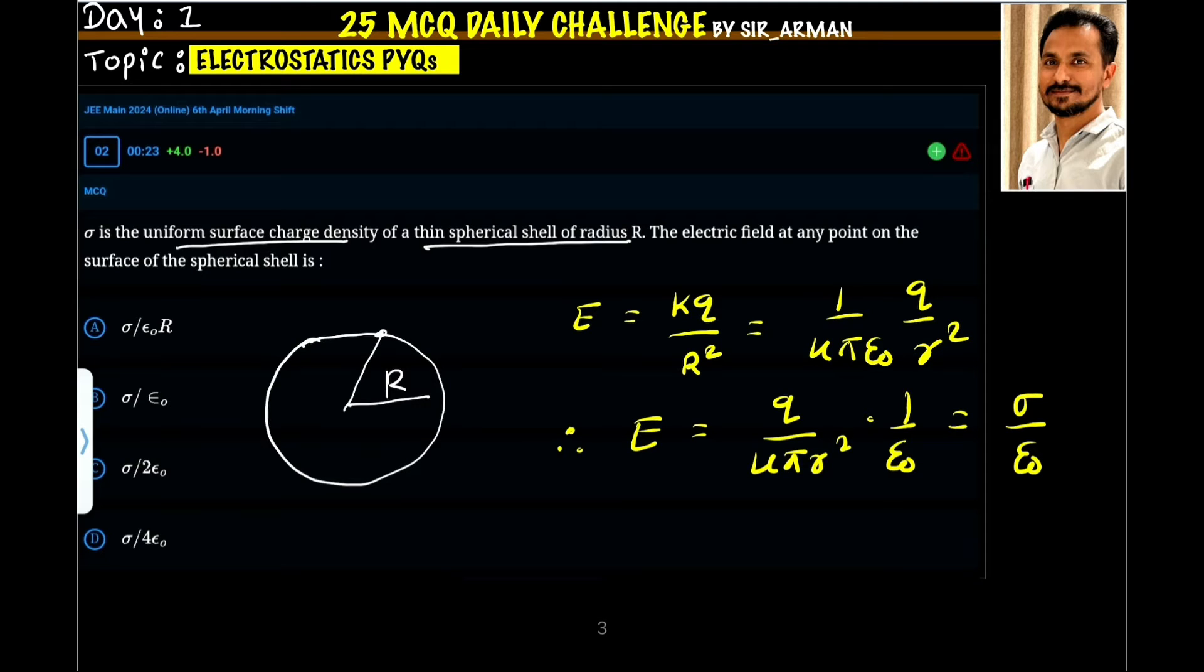On the surface we have to find the electric field. Now from Chapter 1 we know that when the charge is distributed uniformly on the surface of a sphere, the electric field is given by equation E equals kq by r square, which I have given here, where q is the total charge on the surface.